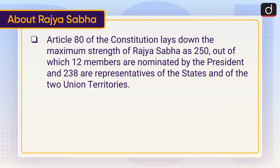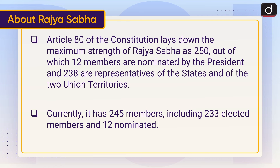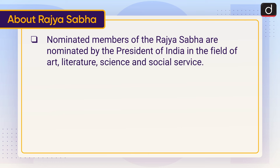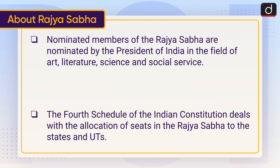Article 80 of the Constitution lays down the maximum strength of Rajya Sabha as 250, out of which 12 members are nominated by the President and 238 are representatives of the states and of the two Union Territories. Currently it has 245 members, including 233 elected members and 12 nominated members. Nominated members of the Rajya Sabha are nominated by the President of India in the field of art, literature, science, and social service.